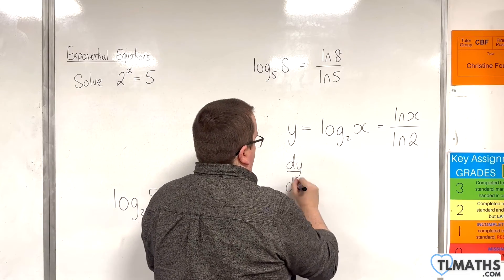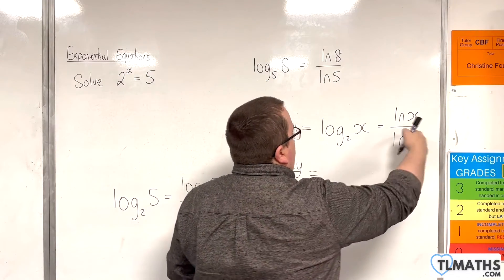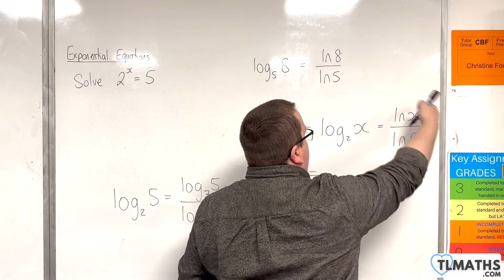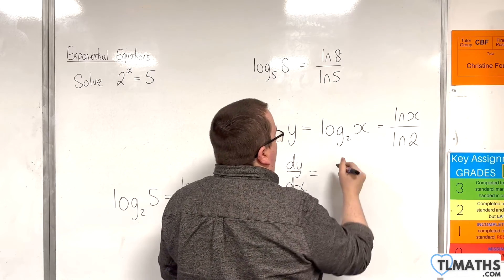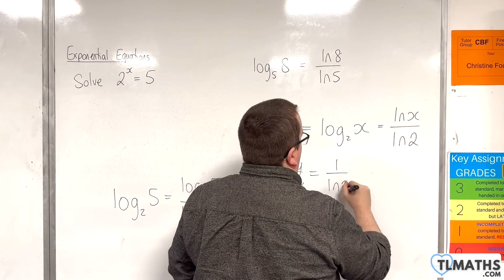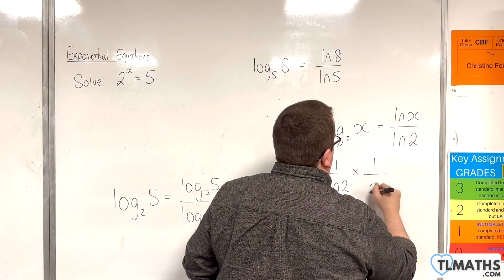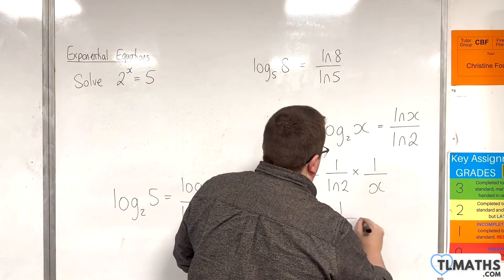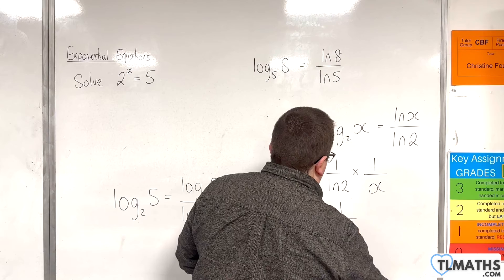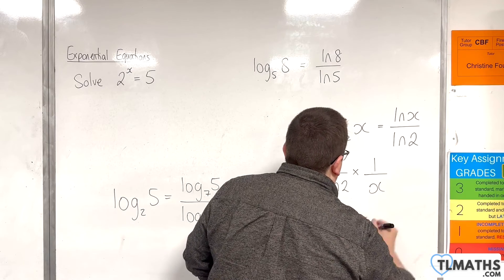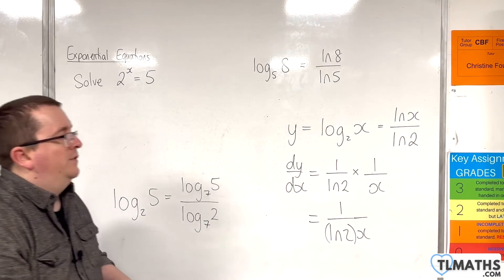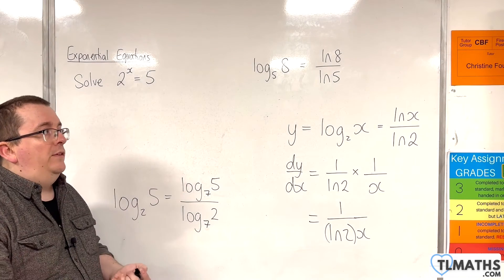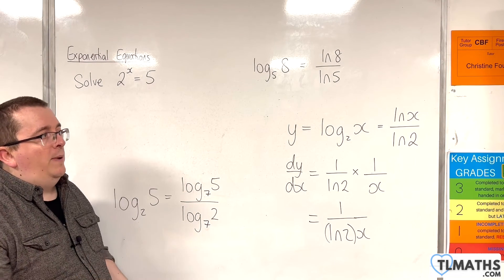Then, differentiating that, it's differentiating this. Now, log x differentiates to 1 over x. So, we have 1 over log 2 times by 1 over x. And so, that is 1 over the natural log of 2 times by x. And that is our derivative. So, that is one of the uses of changing base.